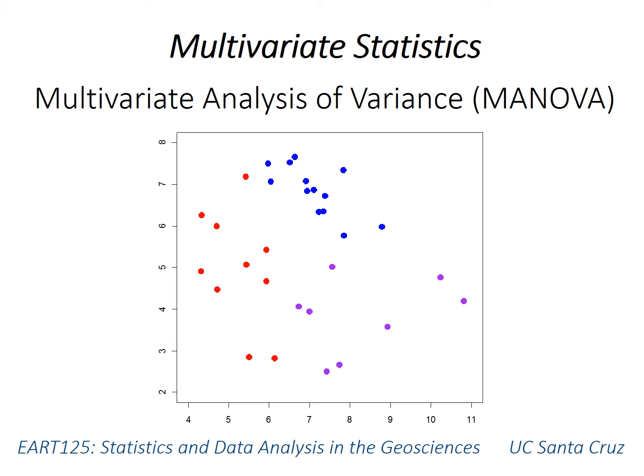This video introduces the last of the classical frequentist methods for null hypothesis statistical testing that we're going to cover in this class. It's called multivariate analysis of variance, or MANOVA, and as its name suggests, it's the multivariate version of ANOVA, which you've already learned about.